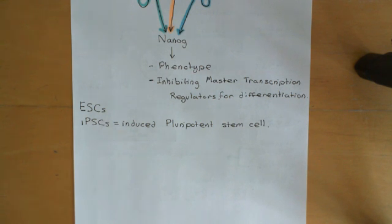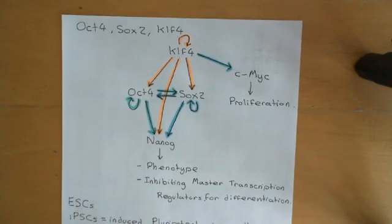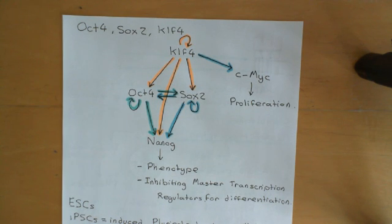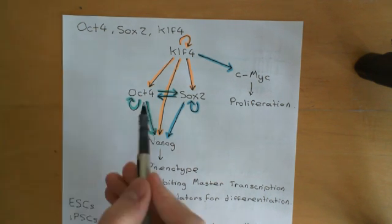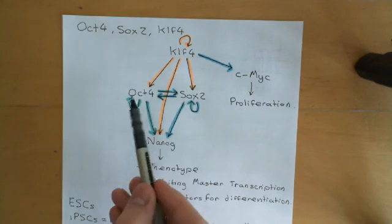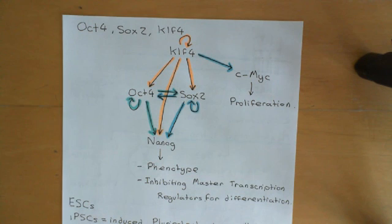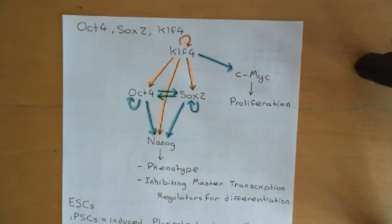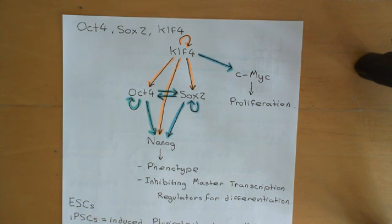How could you do this? Look at what we know about the master transcription regulators of the pluripotent state. If we were to artificially force a somatic differentiated cell to express these three master transcription regulators — KLF4, OCT4, and SOX2 — we can force their expression by, for instance, retrovirally infecting the cell with an additional copy of the gene, so that it produces more of those factors. Would that return us to an embryonic stem cell-like state? Yes, it would.